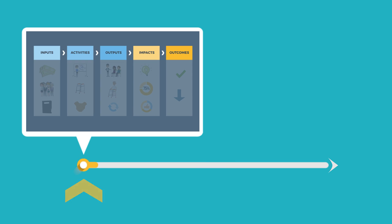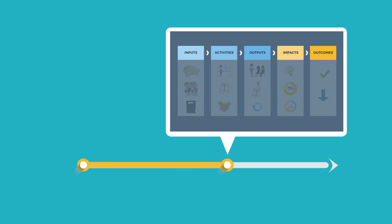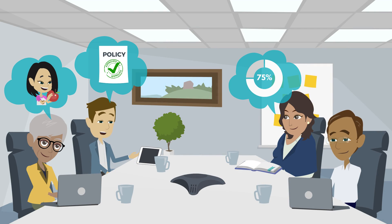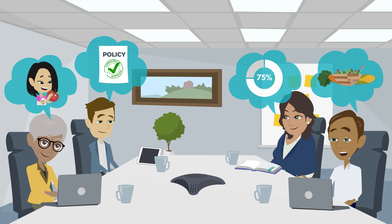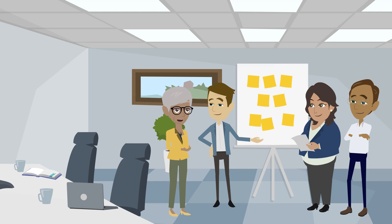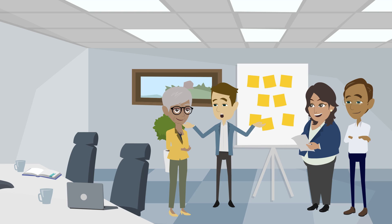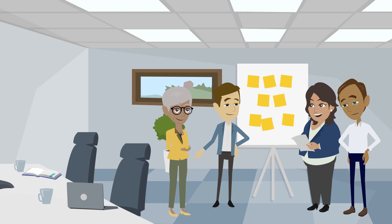The best time to develop a program logic model is at the start of a program. Although not ideal, it can also be done when a program is already underway. The model is best created by working together with a range of people who understand the program or issue. This helps to ensure the model is relevant and to create a shared sense of ownership and accountability.